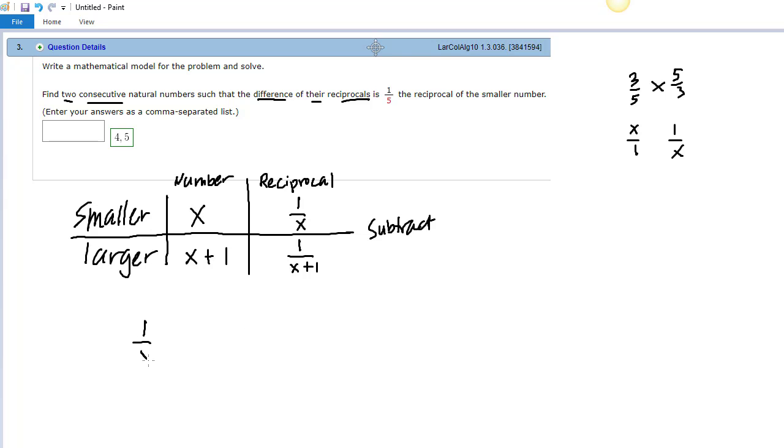So we're going to take 1 over x and subtract 1 over x plus 1, and that difference is, so when you see 'is' in a word problem that always means equals. Now 1 fifth the reciprocal of the smaller number. One little word that's missing here is 1 fifth of, and I like to have that word 'of' in there because 'of' always indicates multiplication. So we're going to take 1 fifth of the reciprocal of the smaller number, which was 1 over x. That's the equation that we will use to solve, and that's the biggest challenge I think to this problem is getting to this point.